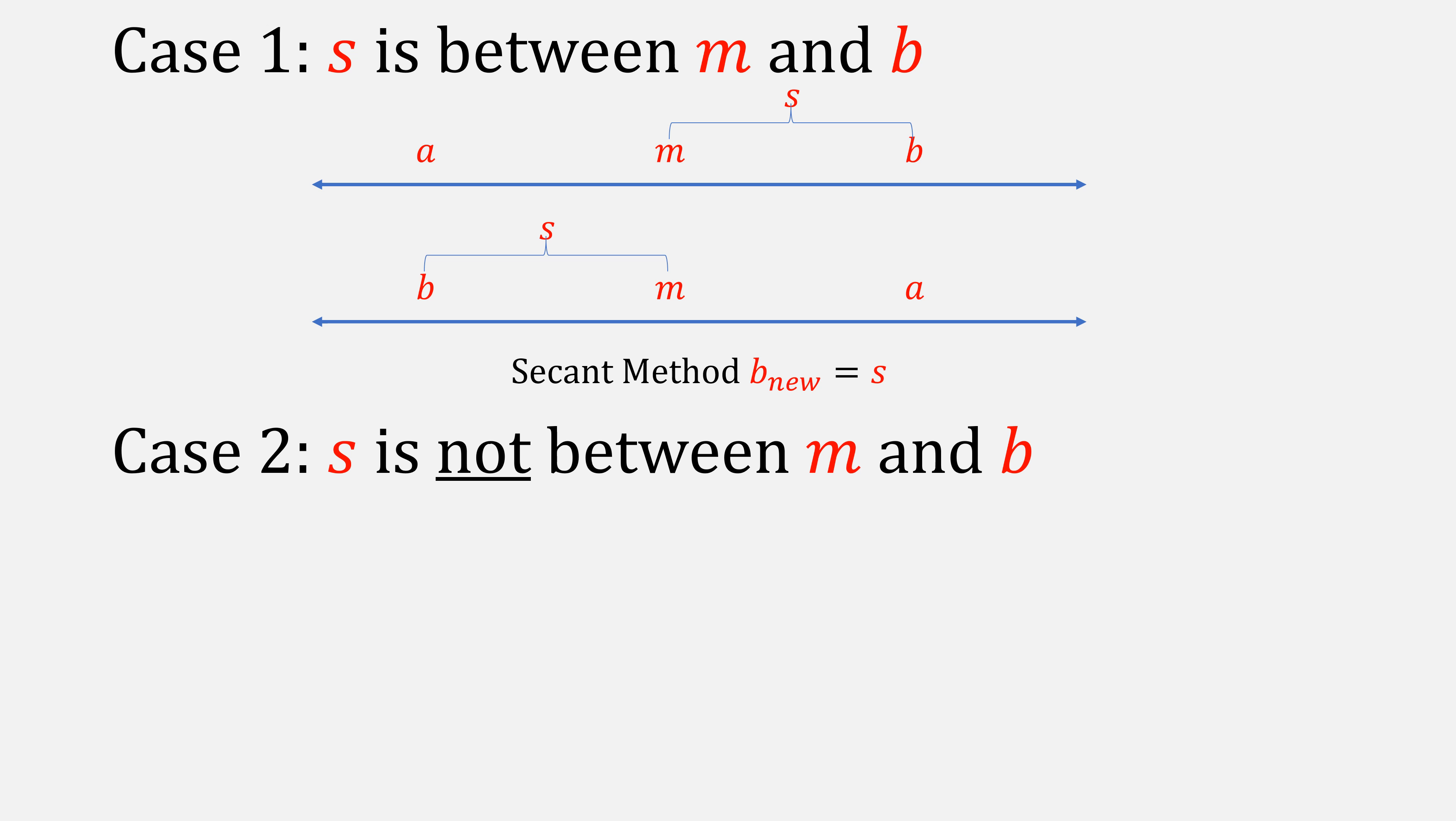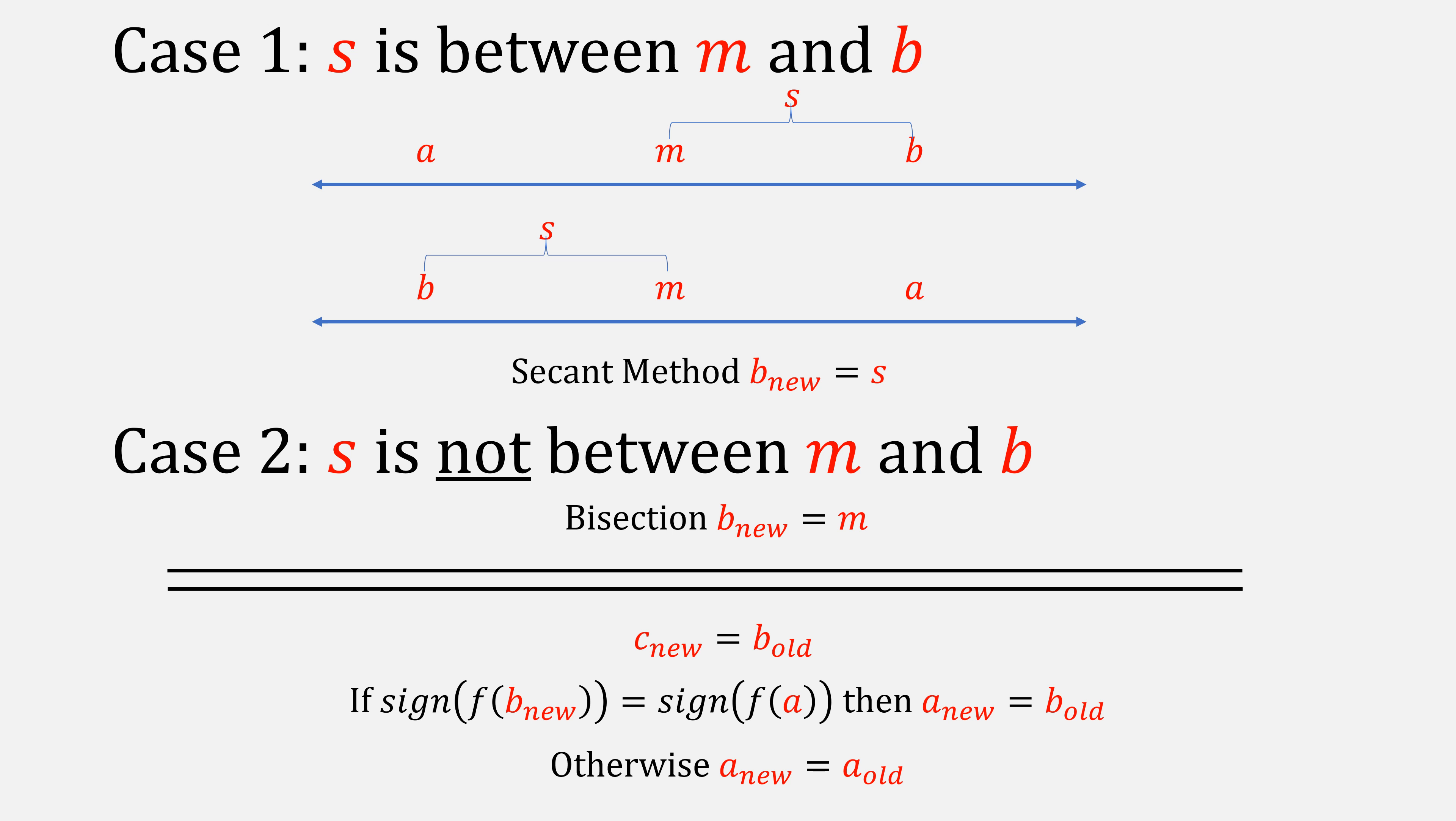Otherwise, s is not between m and b, and when this happens, we use bisection. We make our new b the value of m. Then regardless, we update our c to be the old value of b, and then we check the sign of our function at our new b against the sign of the function at a. If they're the same, then we make a our old b. Otherwise, we keep a as itself.